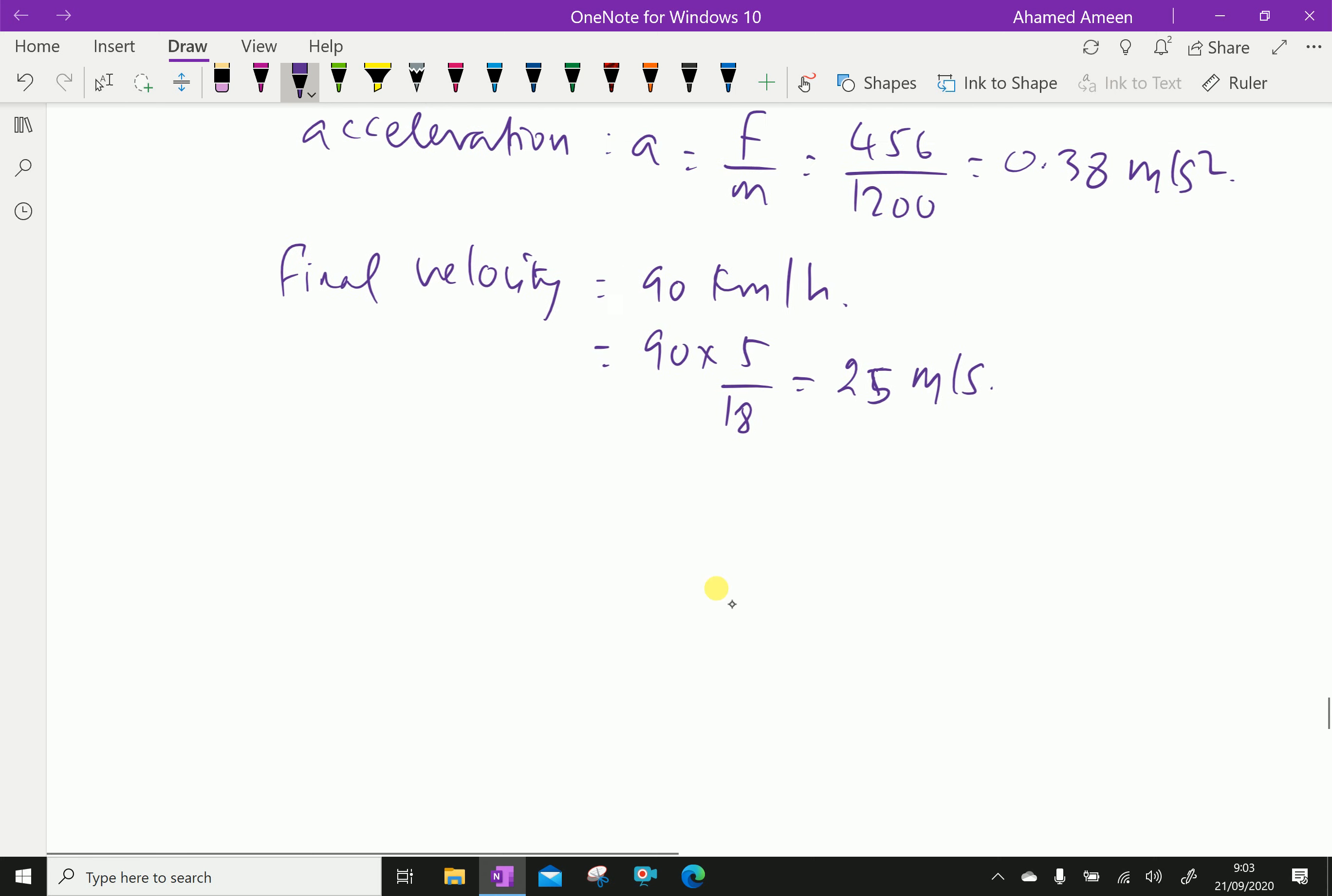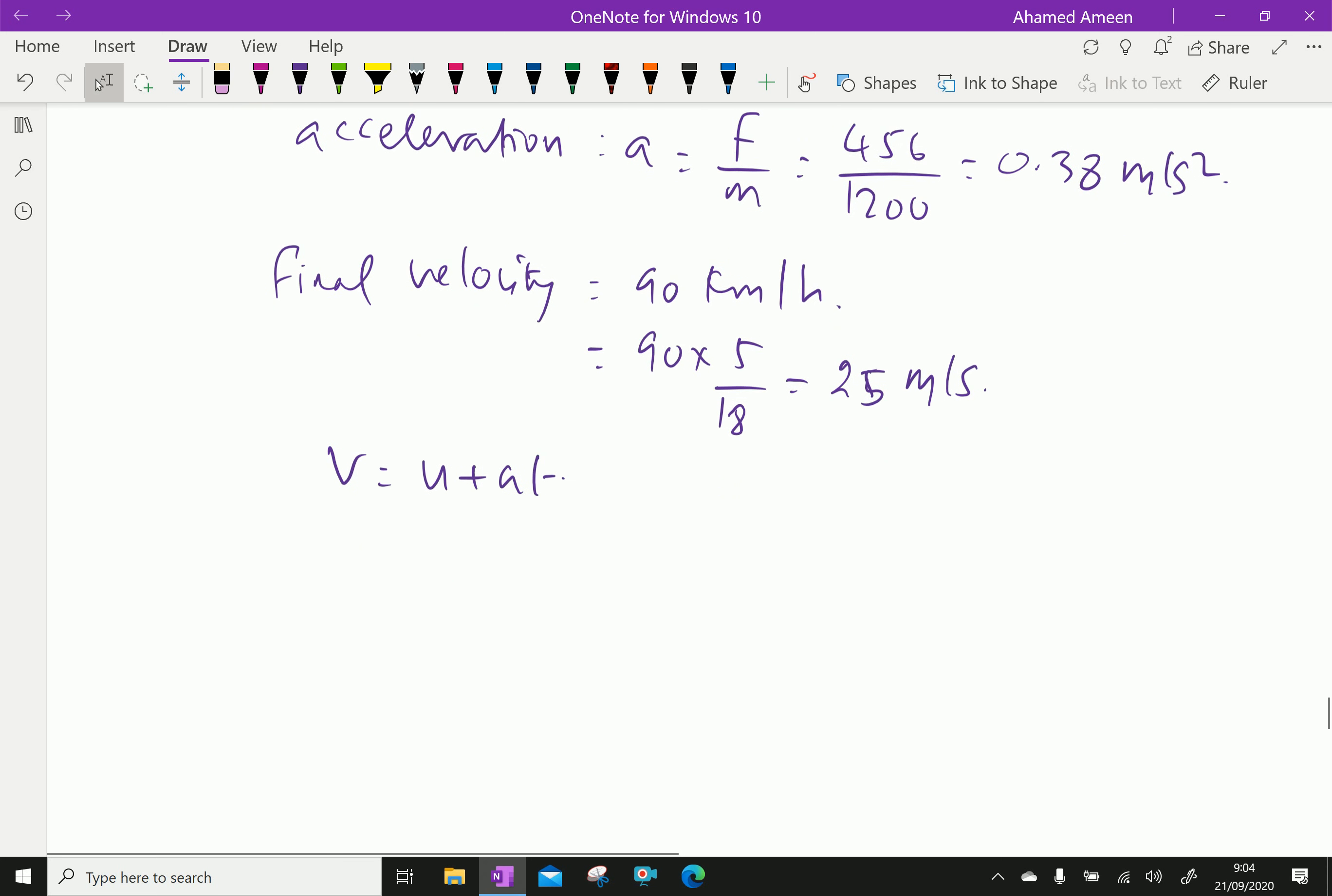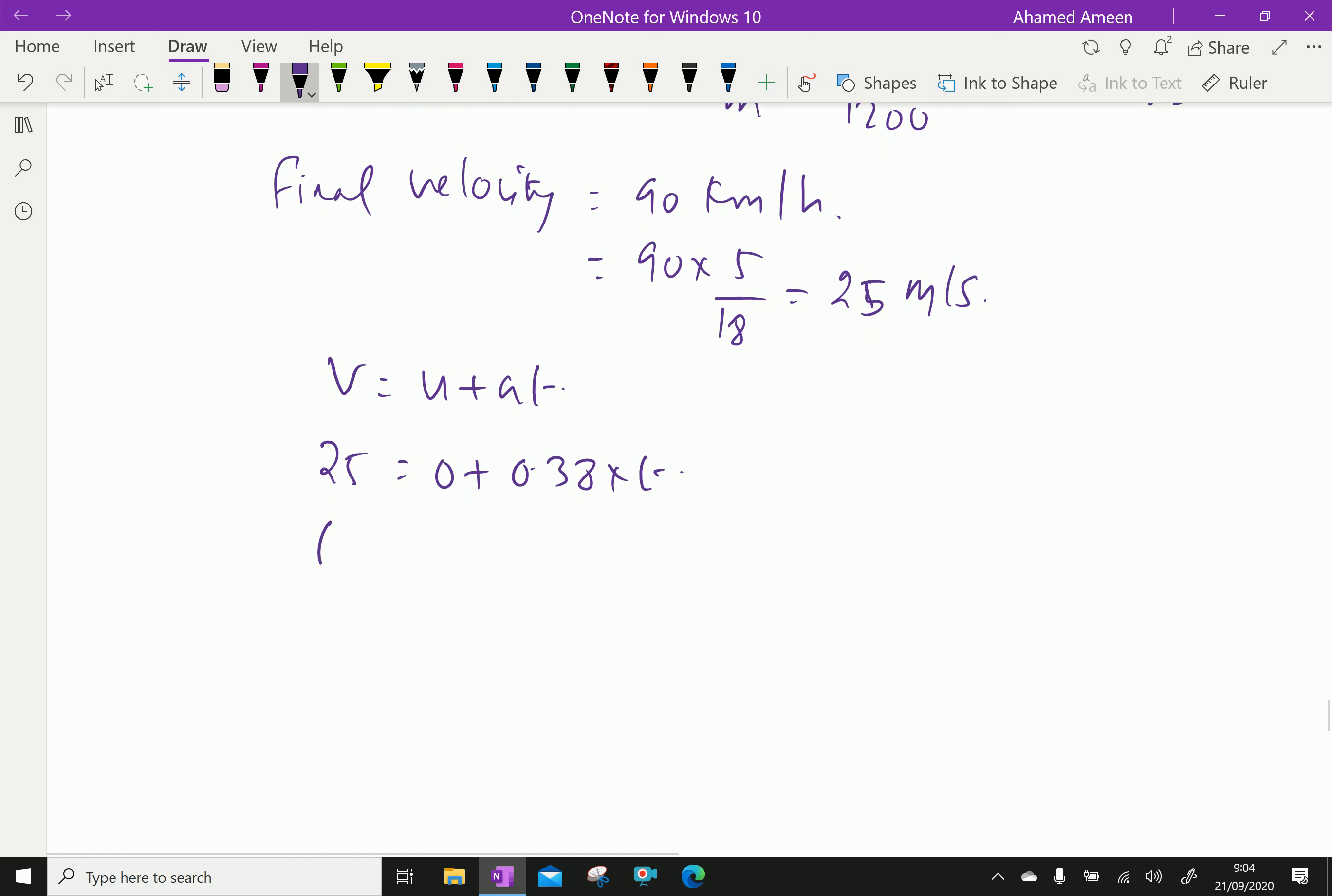Using V equals U plus AT: V is 25 meter per second, initial velocity U is 0, and A is 0.38 into time T. Therefore T equals 25 over 0.38 equals 65.8 seconds.